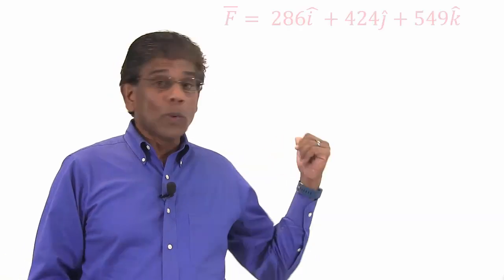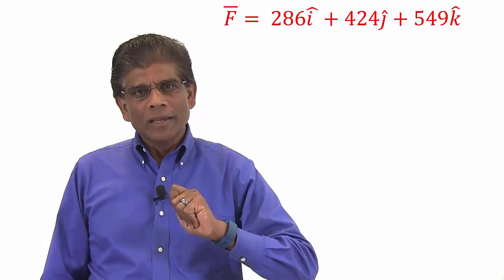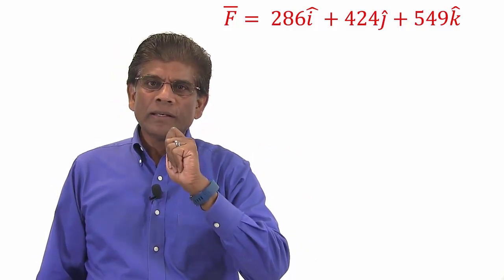Let's expand this a bit more. Let's say f is a vector in 3D space, and it is equal to 286i plus 424j plus 549k.